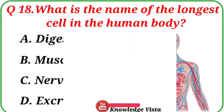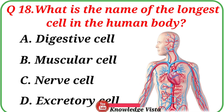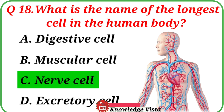Question No. 18: What is the name of the longest cell in the human body? Your options are: A. Digest of cell, B. Muscular cell, C. Nerve cell, D. Excretory cell. Correct answer is Option C, Nerve cell.